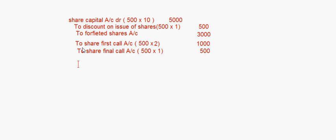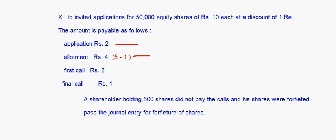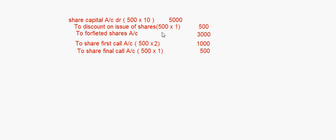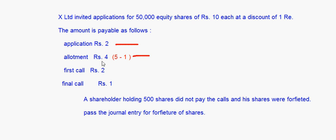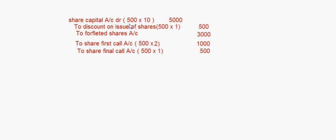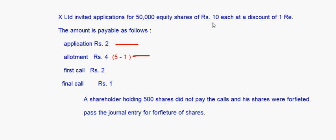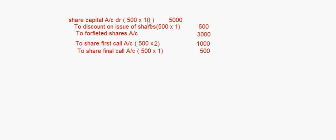This is the entry for the forfeiture of these 500 shares which were issued at a discount of 1 rupee. The discount appears on the credit side as discount on issue of shares. Note that for forfeited shares, allotment money is taken as rupees 4. And for the Share Capital Account, the actual face value of the share is rupees 10, so we write 500 into 10, not 500 into 9.